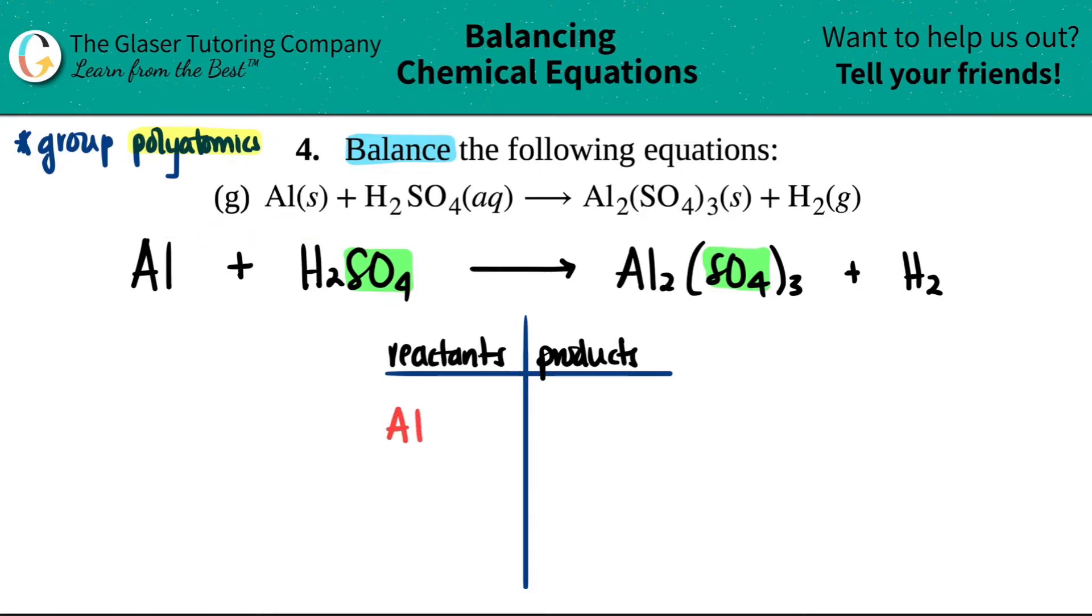So let's write down what we got going on. We have aluminum, we have hydrogen, and now I'm grouping the whole sulfate. I'm not saying just SO because the polyatomic is sulfate, SO₄. And then we know that whatever we do on this side, we have to do on the other side. So Al, H, and SO₄.